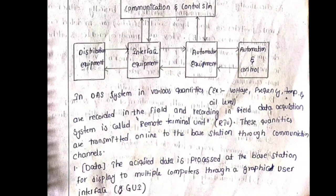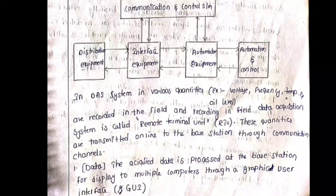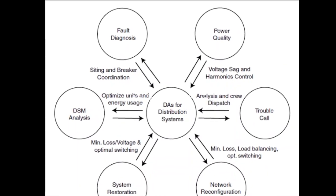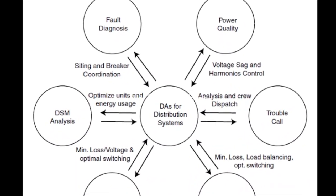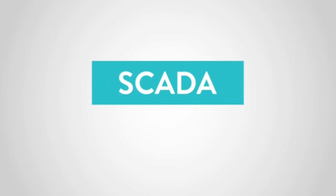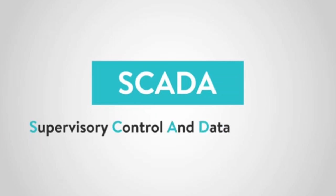The data received at the base station is sent to multiple computers through a graphical user interface (GUI), and all data can be viewed simultaneously across various computers. We also communicate through apps — for example, for bill payment. The diagram represents a simple DAS system showing how various quantities are interfaced. In summary, distribution automation involves data collection, transmission, communication, and man-machine interface, all realized using an integrated SCADA — Supervisory Control and Data Acquisition system.